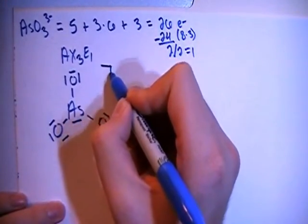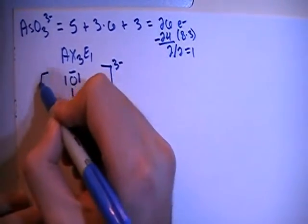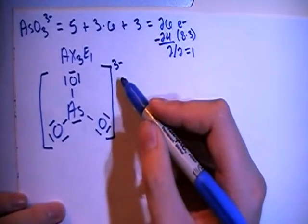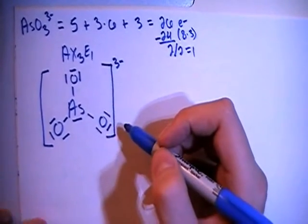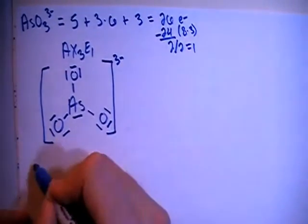Don't forget to add on your brackets, and that's a 3 minus, because this is an ion, and when you draw the Lewis dot structures for ions, you have to put these brackets around and list the charge up top. Let's go ahead and verify that this is correct by calculating the formal charges.